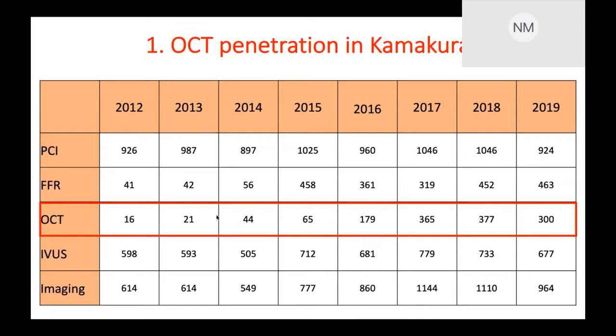This is the case number of our PCI, including FFR and imaging modality in Shonan Chemical General Hospital. Since 2012, the PCI case number remains around 200 to around 1,000 cases annually. In 2012, the OCT case number was just 16, but since 2016, OCT case numbers have been rapidly increasing from 170 to more than 300 cases annually.